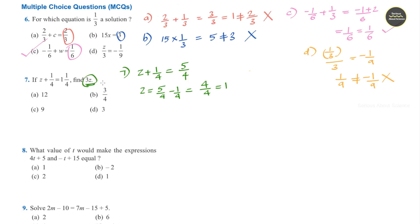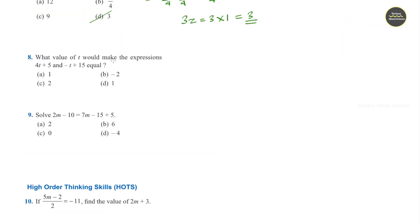Now we need to find what is 3z. So 3z is equal to 3 times 1 which is 3 itself. So option b. Question number 8.